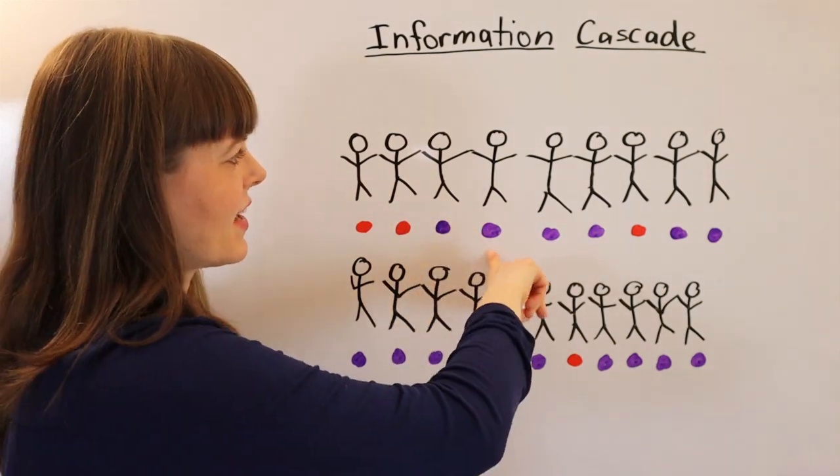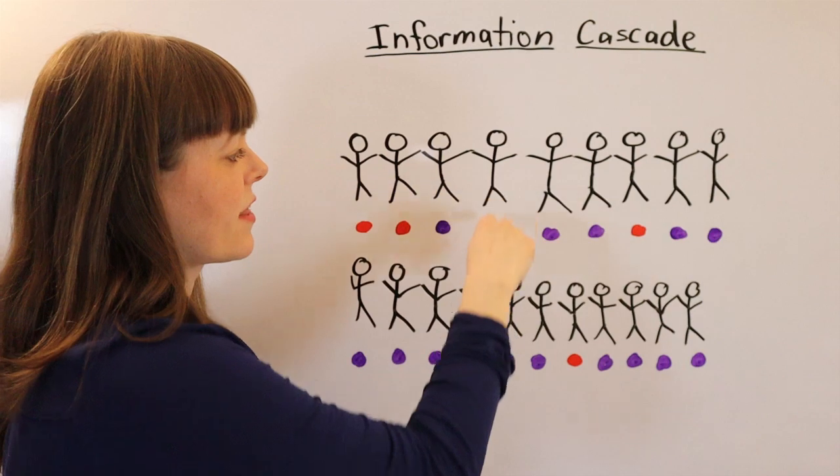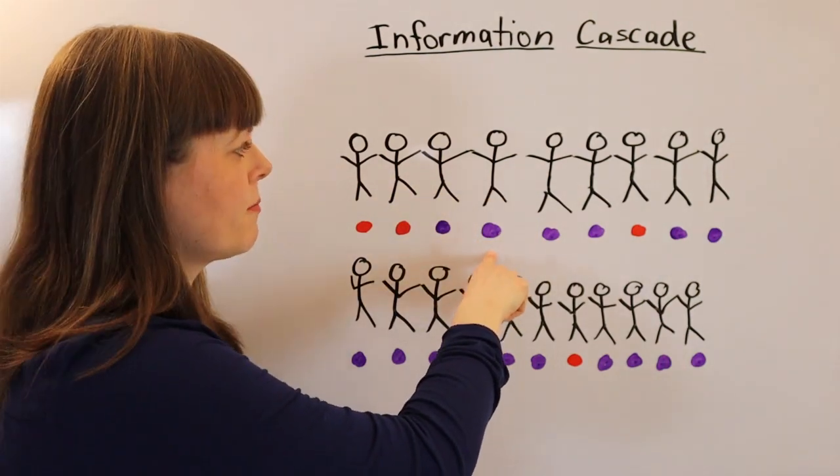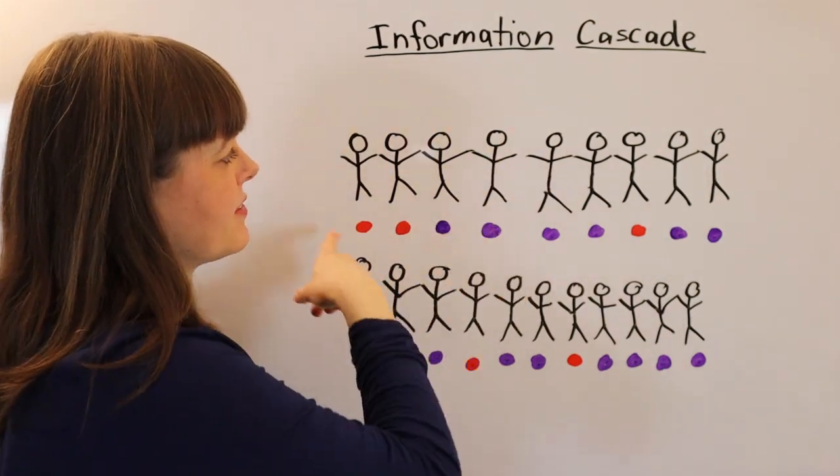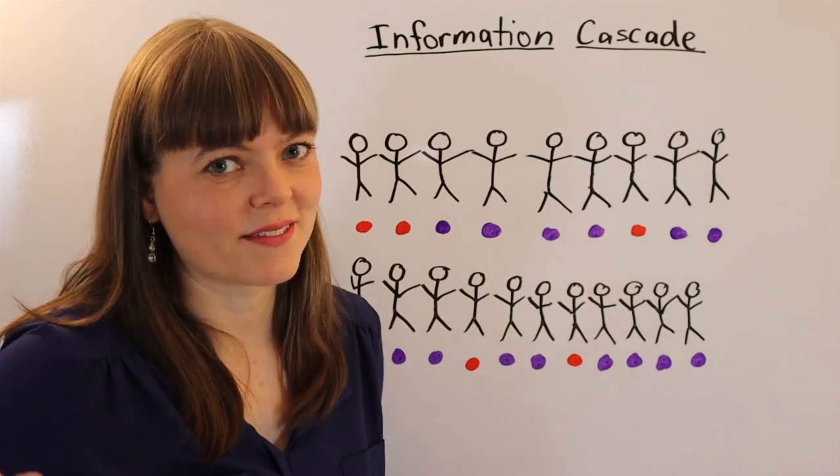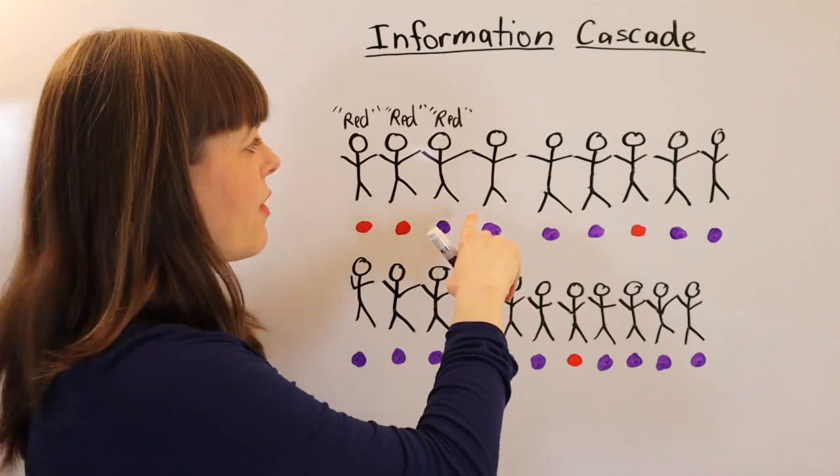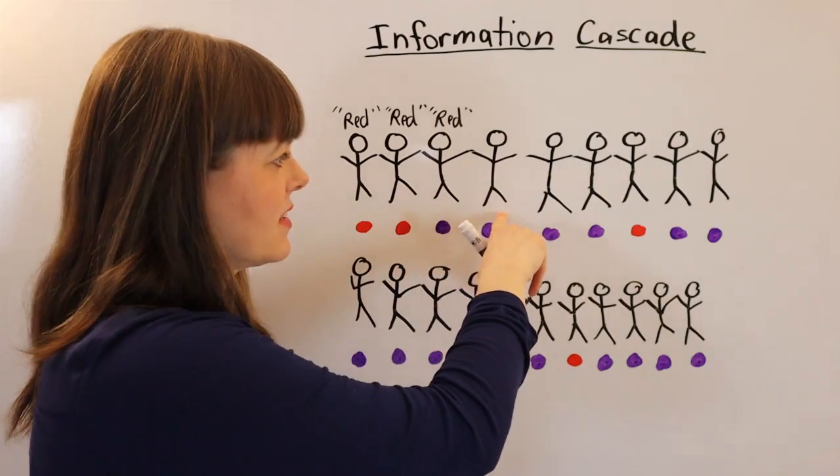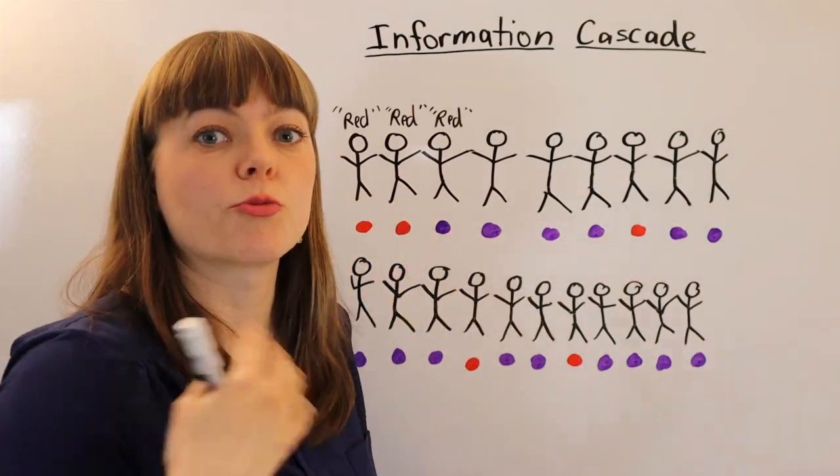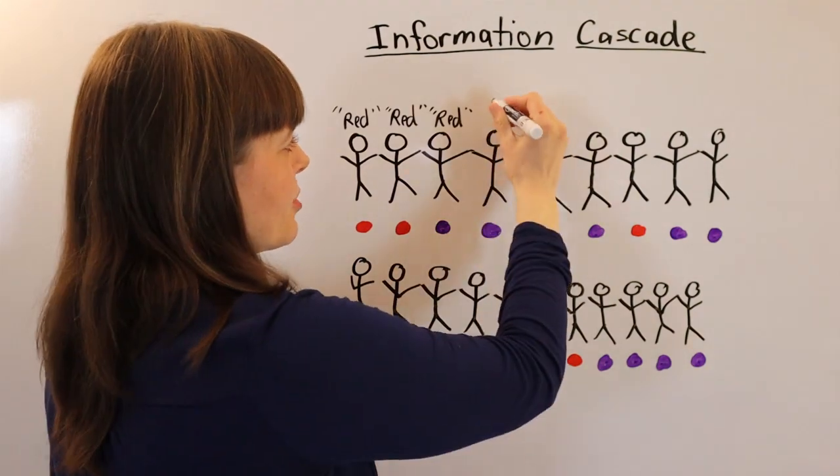Now, what's the problem? We get to the next person and the next person only knows their own draw, which is purple, and what other people have said. So let me write out what they've said. This person says, well, I got purple, but the other three have said red. My best bet is that this marble jar has more reds than purple. So this next person says red.